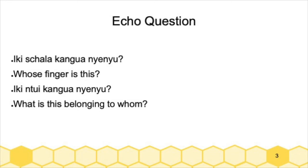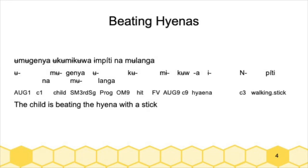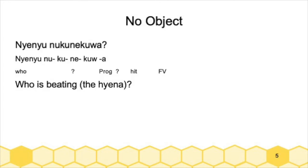I was also eliciting sentences about beating hyenas — I think I had about 20 sentences in the end about beating a very poor hyena, but as Andrew said, for science. I used this basic sentence: 'the boy of the child is beating the hyena with a stick.' From that I derived many sentences, and you can simply ask 'who is beating the hyena' and leave the object out.